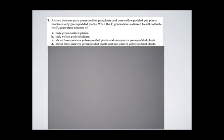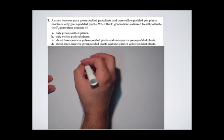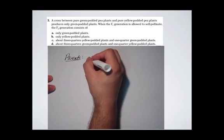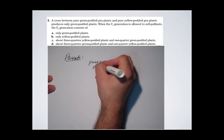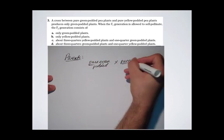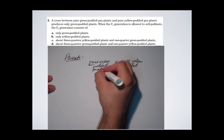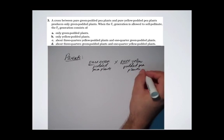So here are the sex cells — that's it. A cross between pure green potted pea plants and pure yellow potted pea plants. Right away, I'm not going to continue reading further because I know one of the first things I have to do is write down who the parents are. They're telling me that the parents are a pure green potted plant crossed with a pure yellow potted pea plant.